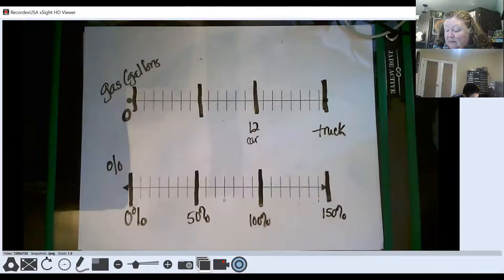We just simply spaced out our number line and labeled it. If this is 0, 50, 100, then this space difference was equaling 150. And then we matched up above to our blank number line for gallons. This is zero, just like this is 0%.